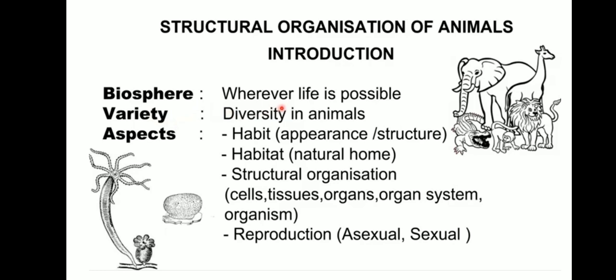Under aspects, reproduction also comes. Reproduction is producing offspring — producing the young one of the same kind. It may be of both ways: sexual as well as asexual. So these are all aspects of the organisms.